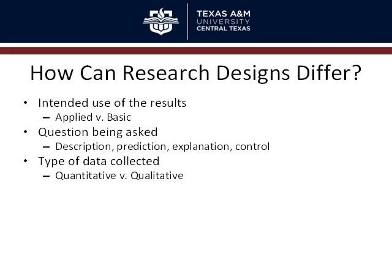Conceptually, with quantitative research, you're looking at measuring variables — how much of something is present or absent, how long did it take — some way to measure or quantify, usually some behavior or some construct. Whereas qualitative research is looking at the quality of a phenomenon or behavior. So not how much of something happened, but what happened, in qualitative or more descriptive terms.